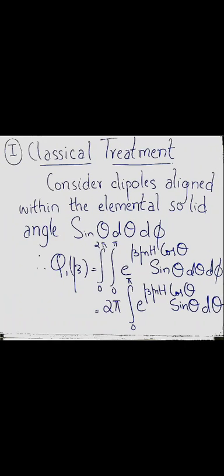In the classical treatment, mu and mu_z can take any arbitrary values. We consider N dipoles aligned within an elemental solid angle since they can take any orientation, so that Q_1(beta) = integral from 0 to 2pi, integral from 0 to pi of e^(beta*mu*H*cos(theta)) * sin(theta) d(theta) d(phi).